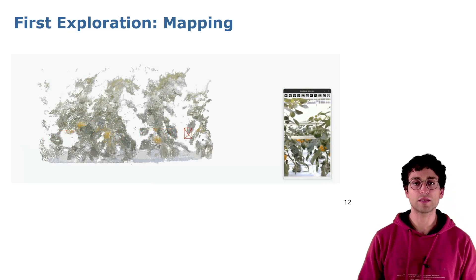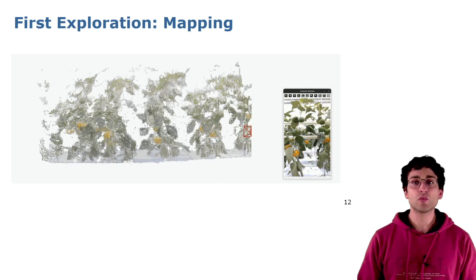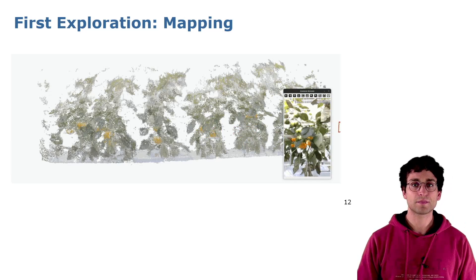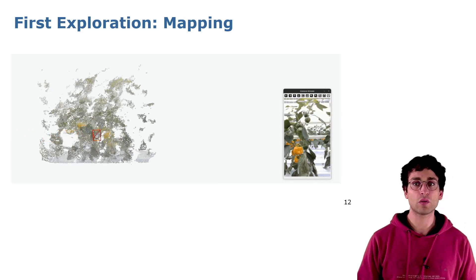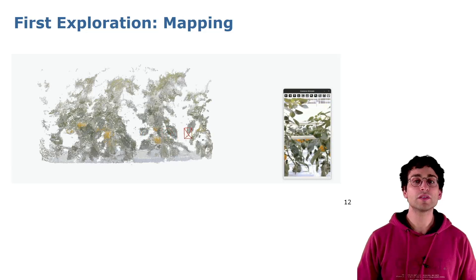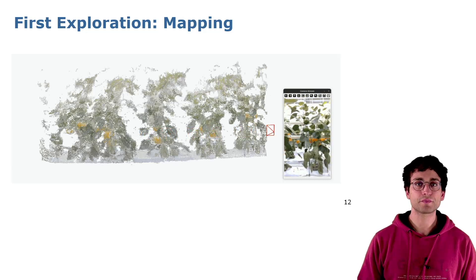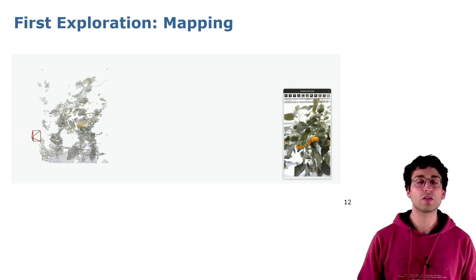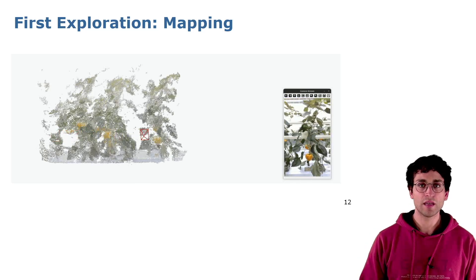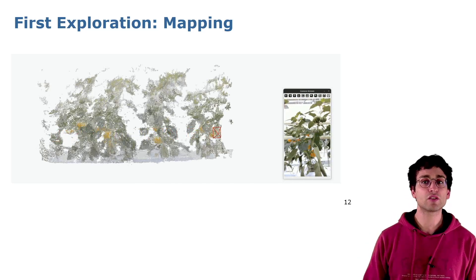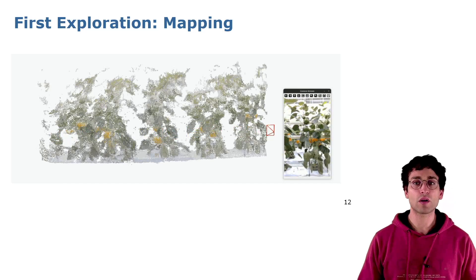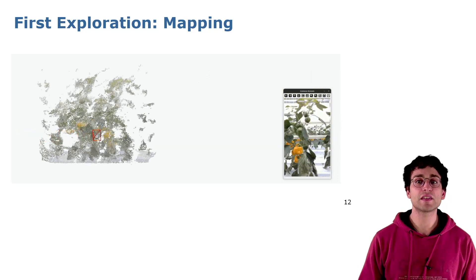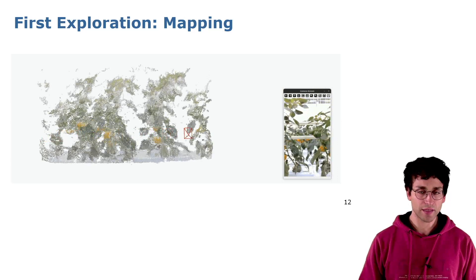Imagine that we need to model plants in a glasshouse for our agricultural tasks. We first go in the field with our robot, and what we want is a simple 3D model of the environment. In order to achieve this, we need to perform a typical odometry mapping task. This is an example of the result obtained with our method in our glasshouse using RGBD sensors. This serves as a reference map for subsequent updates.